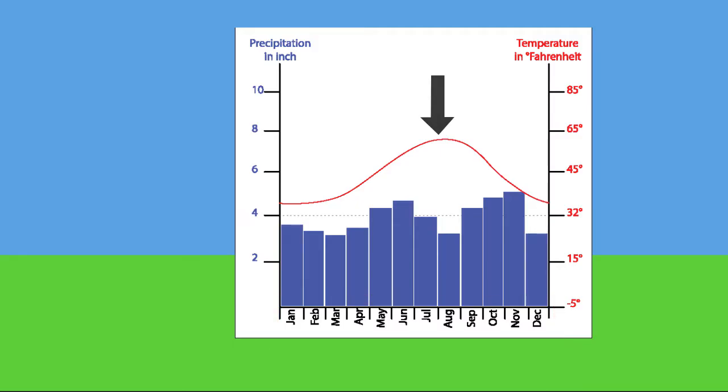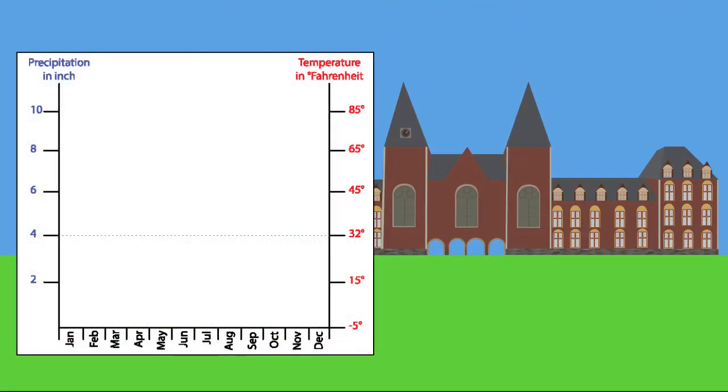By making a line we can visualize the average temperature per month for a specific place. The temperature is shown on the right side of the climate graph. When we draw a temperature line for Amsterdam, the Netherlands, we can see that it's on average 35 degrees Fahrenheit in January and February. Winter ends and it starts getting warmer.